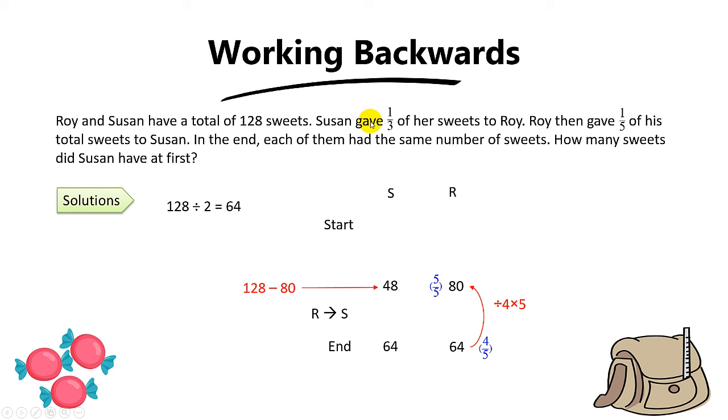Susan gave away one-third of her sweets. So when Susan gave one-third, she will be left with two-thirds. You take one minus one-third, you get two-thirds. So how do we work backwards? You take 48 divided by two times three. You get 72 sweets for Susan.